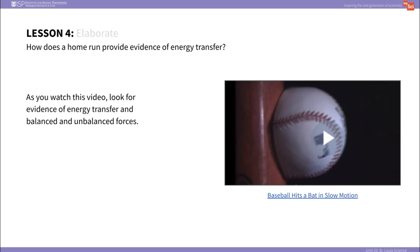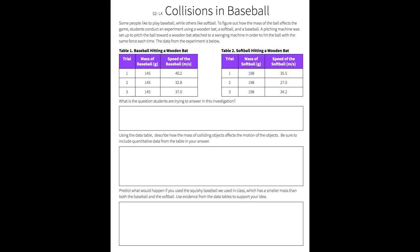In the elaborate portion of this lesson, students will watch a video showing a bat colliding with a ball in slow motion. They'll look for evidence of energy transfer and unbalanced and balanced forces. Students will then analyze data about how the mass of an object hitting a bat can affect the energy transferred, comparing one set of data from a baseball and one from a softball, looking at the final speed of each. They should remember that the more speed something has, the more energy it has.